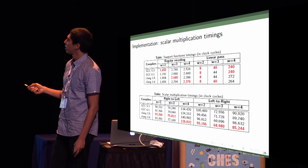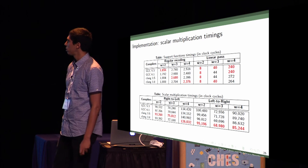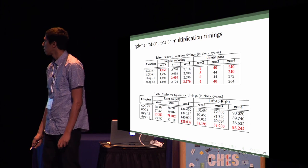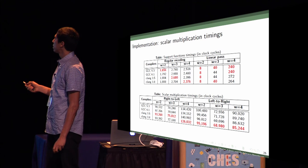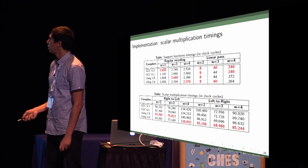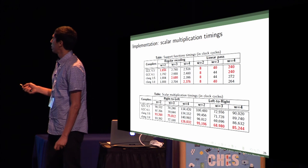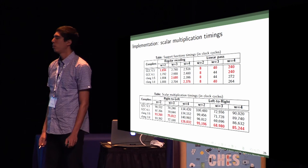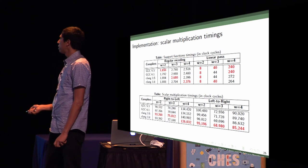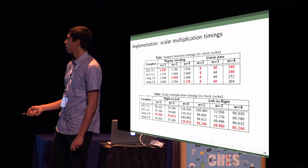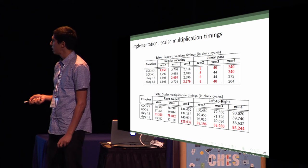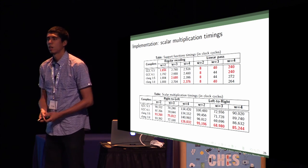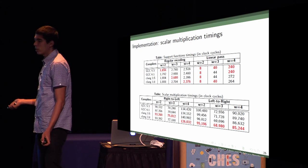This is our timings. This is the regular recoding based on Joye and Tunstall. It takes about 2000-3000 clock cycles. The linear passes to be done to avoid cache attacks increase with the width, because you have more points. This is right-to-left and left-to-right. Right-to-left is more costly because you need two linear passes, and in the iteration and post-computation cost, it's more expensive than the precomputation cost.